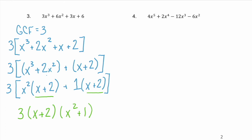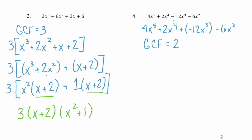Let's look at another example. Notice that the middle term has a negative sign. We can rewrite that negative sign as plus the opposite: 4x⁵ + 2x⁴ + (-12x³) - 6x². The greatest common factor of these four terms is the coefficient 2 and the variable x squared. We factor out 2x squared and our four terms become 2x³ + x² + (-6x) - 3.